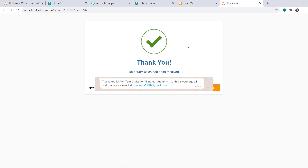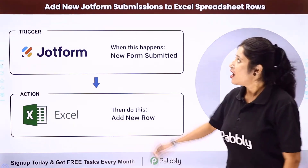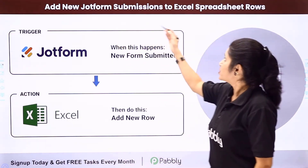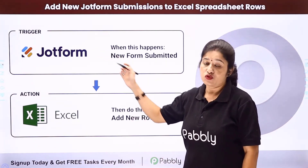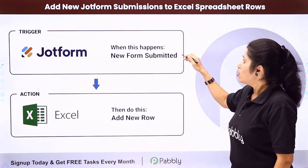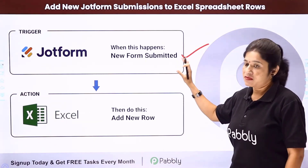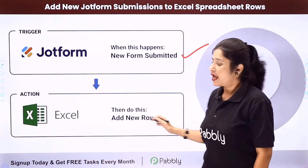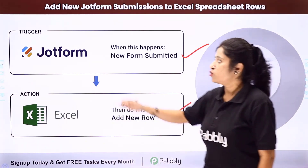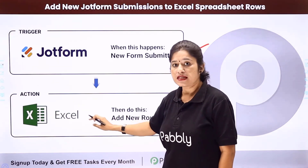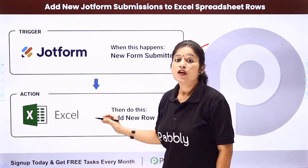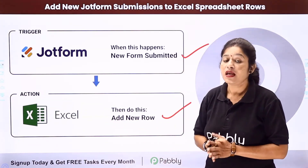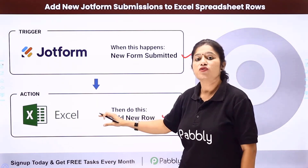In this video, we will learn how to add new JotForm submissions to an Excel spreadsheet row. The idea is that whenever the form is submitted, the details should automatically be added to your Excel spreadsheet as a new row. For that, you need to integrate your JotForm account with Microsoft Excel — the trigger application would be JotForm and the action application would be MS Excel.